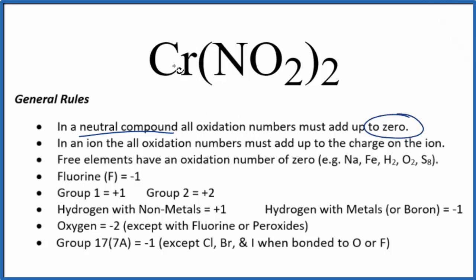Next, chromium, it's not something you'll see in our rules here. It's a transition metal. It can have different oxidation numbers depending on what it's bonded to. So here it's bonded to two nitrite ions.